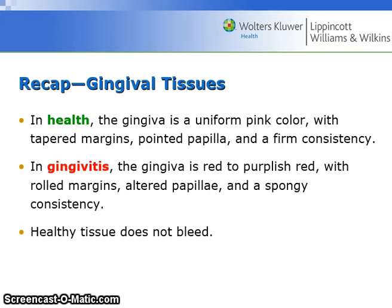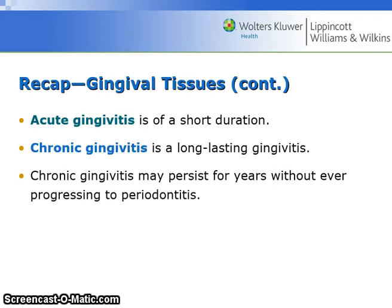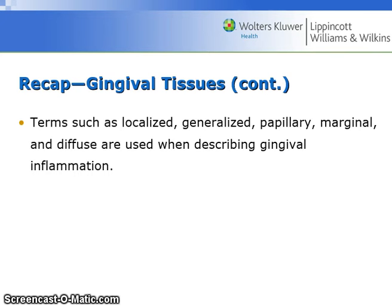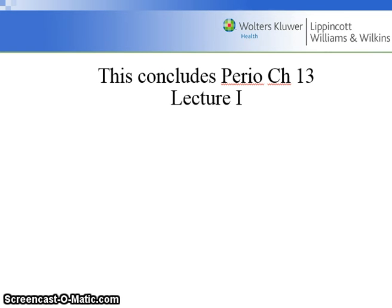In gingivitis, the gingiva is red to purplish-red with rolled margins, altered papilla, and a spongy consistency. Healthy tissue does not bleed. Acute gingivitis is of short duration; chronic gingivitis is long-lasting and may persist for years without ever progressing to periodontitis. Terms such as localized, generalized, papillary, marginal, and diffuse are used when describing gingival inflammation. This concludes Perio Chapter 13, Lecture 1.